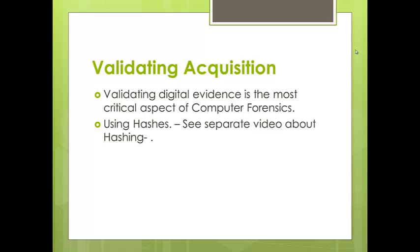One very important thing about acquisition is that we need to validate it. We need a way to make a signature of the acquired file that is repeatable. After acquisition, we want to validate that nothing changed in the copy compared to the original data. We do that using hash. Using hash, which is a form of encryption, validates the acquisition and confirms the data was not changed. Please see the separate video about hashing.